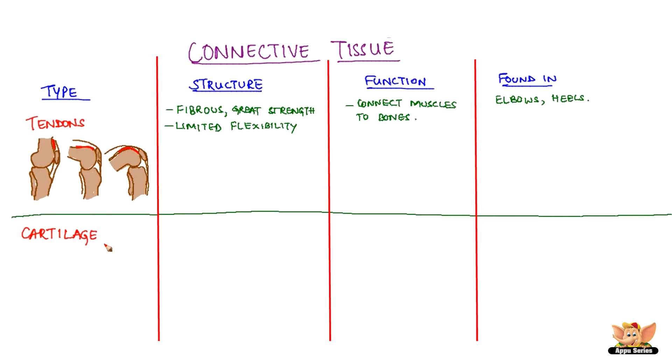Cartilage is a connective tissue with matrix composed of proteins and sugar. This tissue has widely spaced cells.